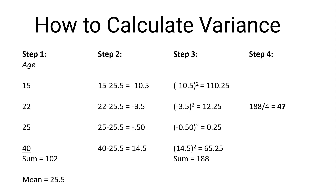Step two: I'm going to take the mean and get a difference score. What I'm going to do is take each response and subtract it from the mean. So with the first one — age 15 — I'm going to take 15 minus the mean and get its difference. Same thing with 22, 25, and 40.